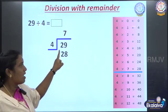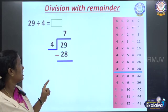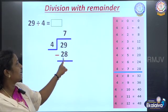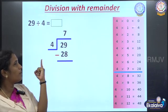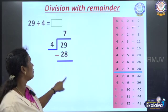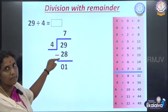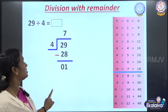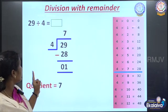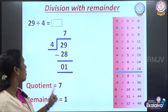Next, we subtract these two numbers. We have 9 and 8. Count from 8 up to 9 — how many fingers do we open? 1 finger. So we write 1. And here we have 2 and 2 — same number — so we place 0. Quotient is 7 and remainder is 1.